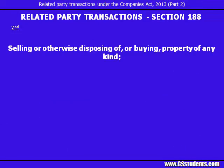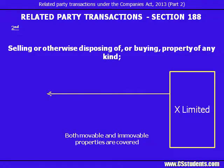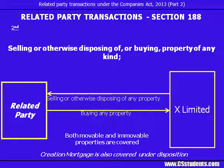The second is selling, or otherwise disposing of, or buying property of any kind. This condition pertains to the buy-sale transactions relating to properties. The term 'property' should include both movable and immovable properties. So if X Limited is either selling or otherwise disposing of property to any related party, or buying a property from the related party, the transaction needs to comply with the consent of the Board and, if required, by special resolution. The term 'otherwise disposing of' should also include mortgage transactions.